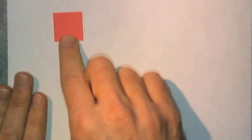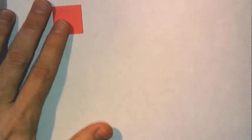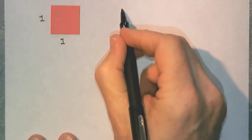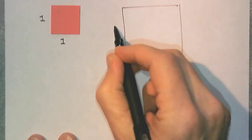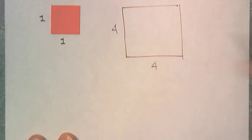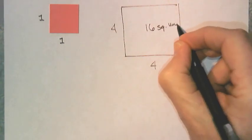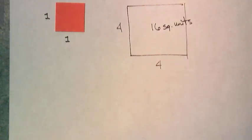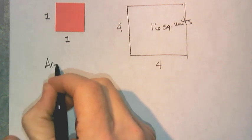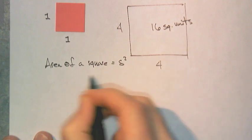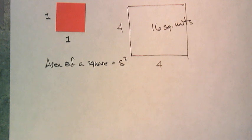That would be a square. A square given by one unit by one unit has an area of one square unit, which makes total sense. If it was a larger square — say four units by four units — crosshatching it all out gives 16 square units. Generally speaking, the area of a square is equal to s squared, where s is the side length.